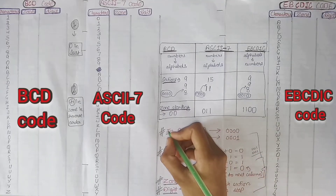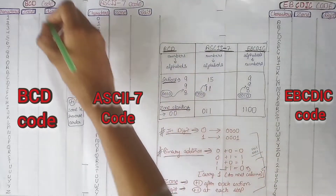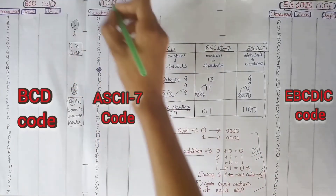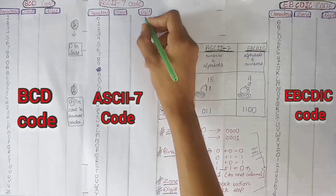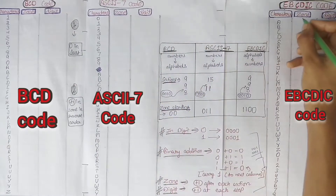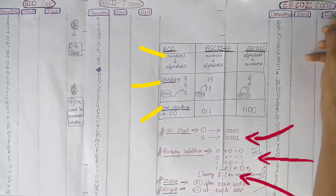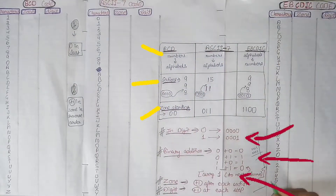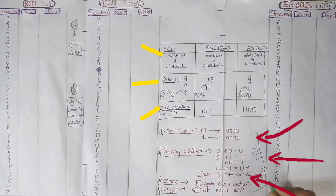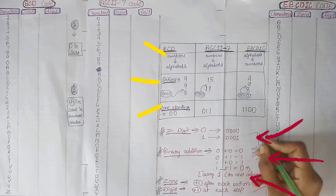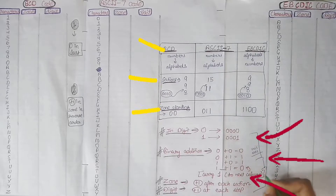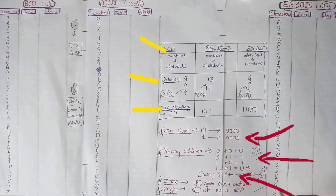Today we will learn how to write the BCD code, ASCII code, and EBCDIC code. Firstly, we must learn these basic four rules.